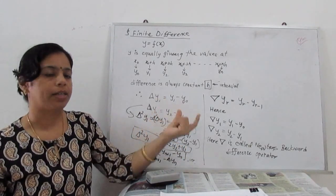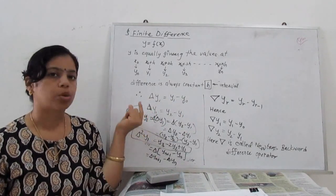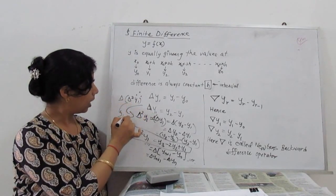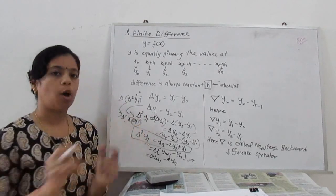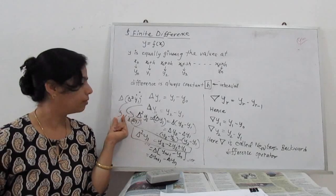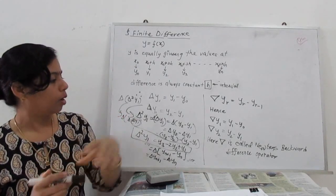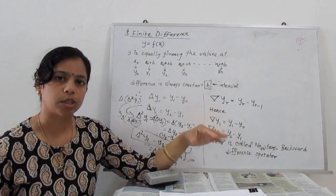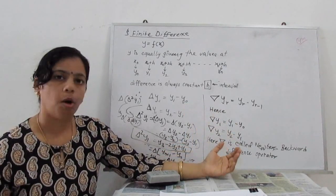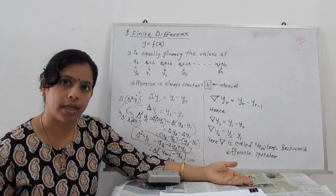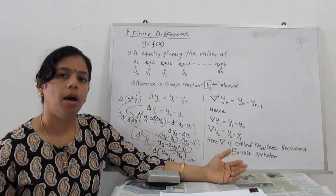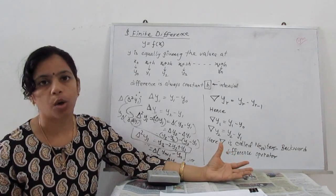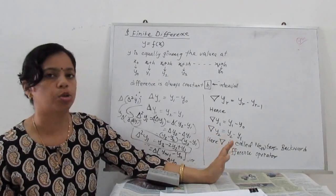These operators are applied step by step. For the third-order operator, we compute delta cubed y1 = delta of delta squared y1, and delta squared equals delta of delta y1 — so we operate three times to get the final result. The same process applies for the backward operator. For a function of degree 3, the third-order difference is constant, and all higher-order differences are zero — just like in differentiation, where the third derivative of a cubic is constant and all higher derivatives are zero.